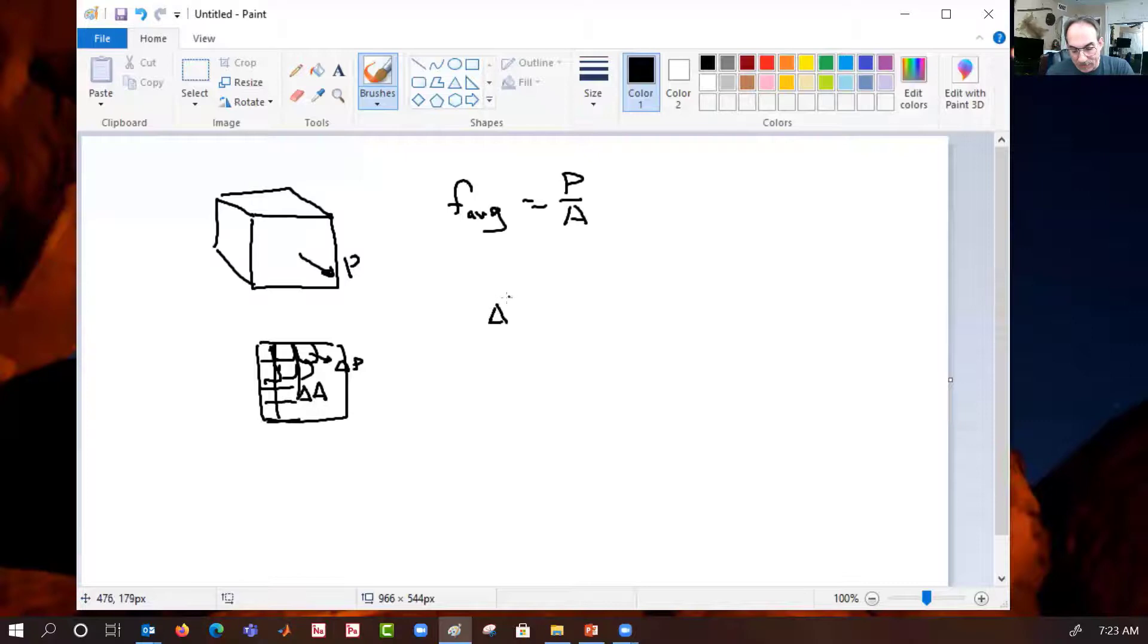Then we could say, if we say the delta P over delta A, that is the stress, the change in P with respect to the change in area. And if we take the limit as that delta A goes to zero, that's the definition of a stress. That's what the stress is.